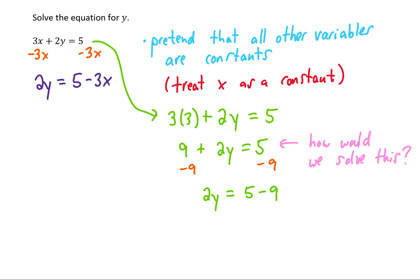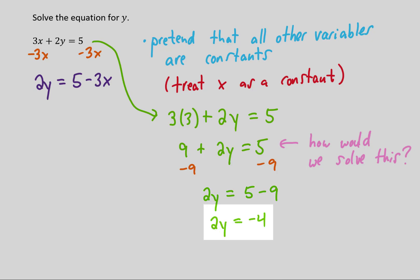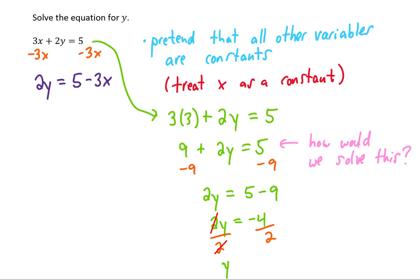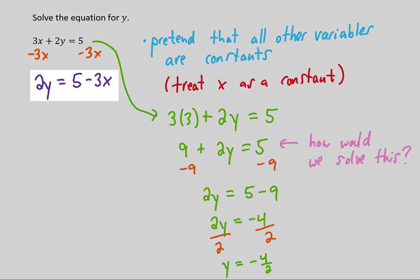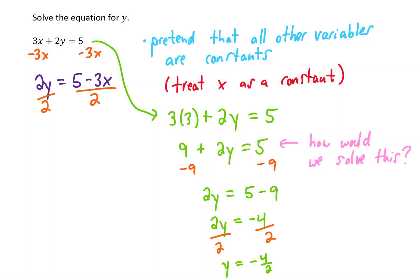That's a great first step. In the concrete example, we would divide both sides by 2 to get y by itself. We apply the same step to the original equation: divide both sides by 2. The 2's cancel on the left, leaving y equals (5 minus 3x) over 2.